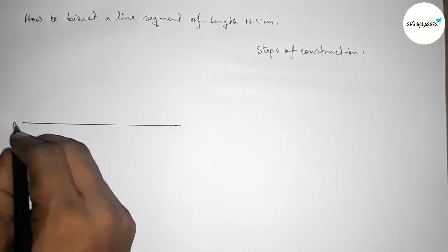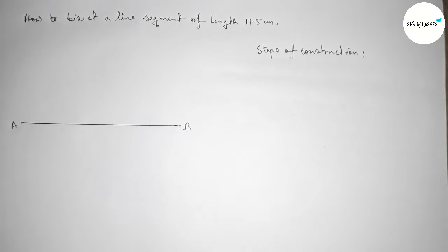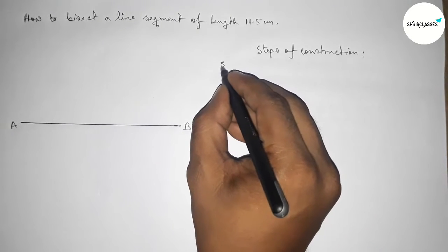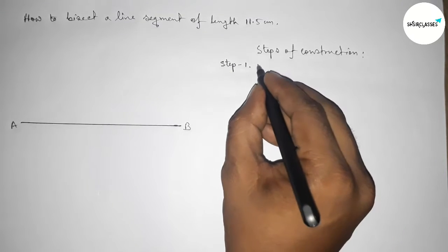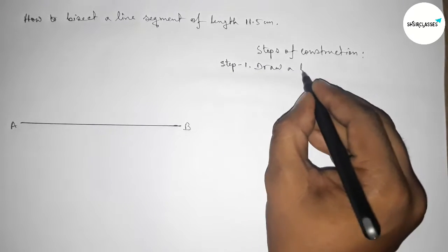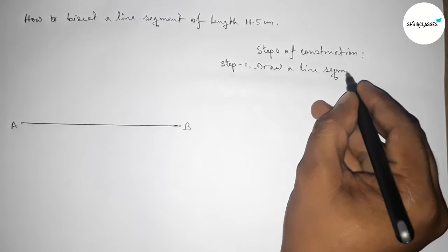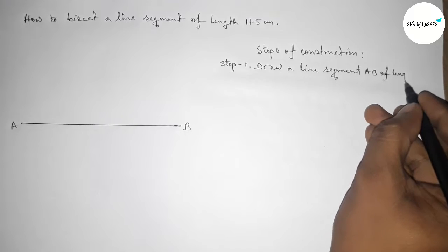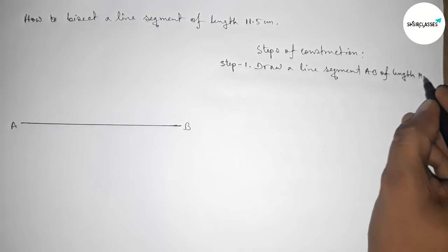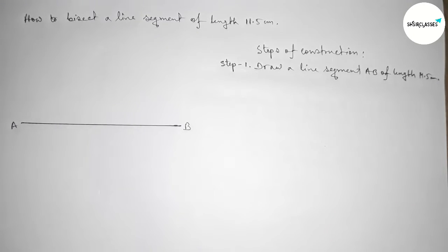So taking here a point A and here B. Now step number one: In step one, first we have to draw a line segment AB of length 11.5 centimeters. Next, we have to bisect the line AB.